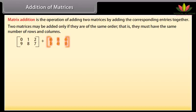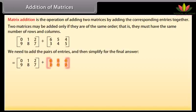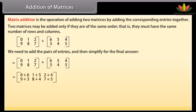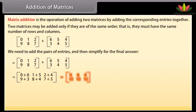Let's add these matrices. We need to add the pairs of entries and then simplify for the final answer. Row-wise: first row [0, 1, 2], second row [9, 8, 7], plus first row [6, 5, 4], second row [3, 4, 5], equals first row [0+6, 1+5, 2+4], second row [9+3, 8+4, 7+5], which gives first row [6, 6, 6], second row [12, 12, 12].